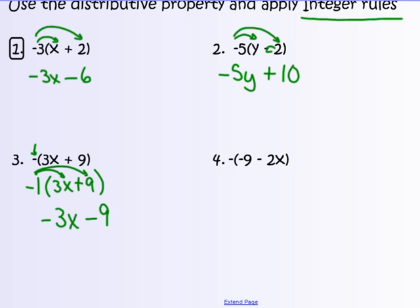Number 4 is another example of making negative what's in the parentheses — or call it negative 1 distributed to everything, or taking the opposite of everything. Negative 1 times negative 9 gives positive 9, and negative 1 times negative 2x gives positive 2x. In algebra we always like the algebraic term first, so the best form of this binomial answer is 2x plus 9.